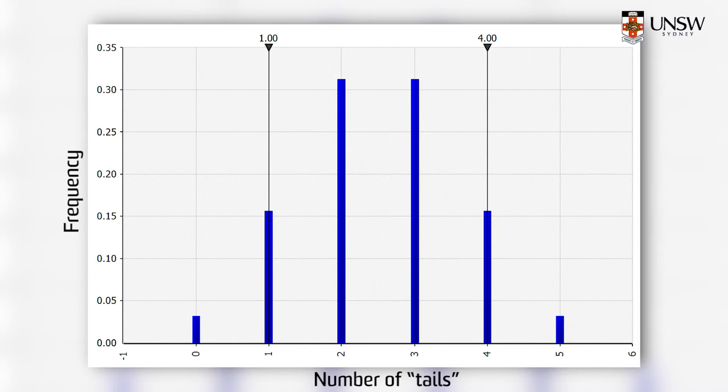Zero tails is a significantly less likely outcome than two tails, and we can represent the relative likelihood of the six possible outcomes as a probability density function. You might recognize this particular type of probability density function — it's called a binomial distribution and it has an observable number of characteristics.